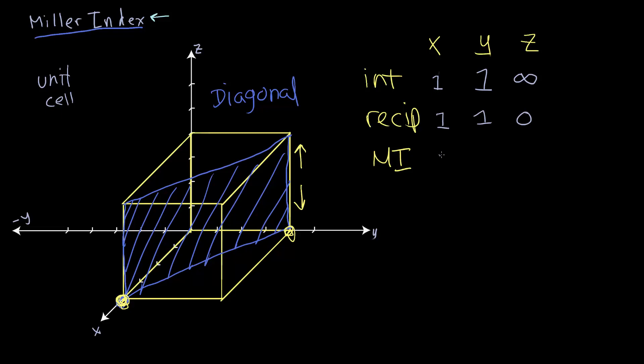And then the Miller index we know is 1, 1, 0. So this plane is the 1, 1, 0 plane.